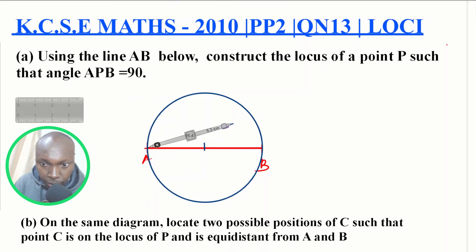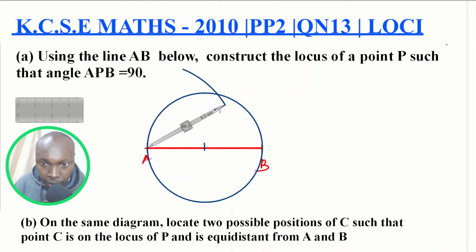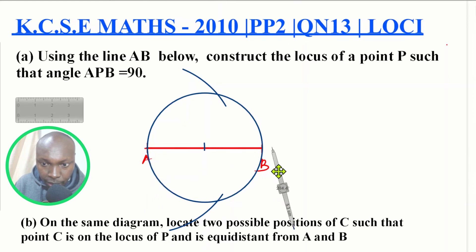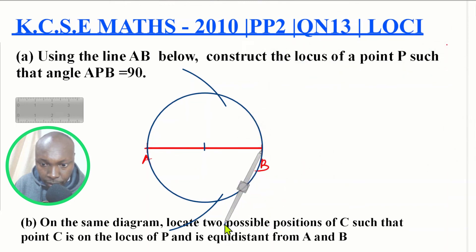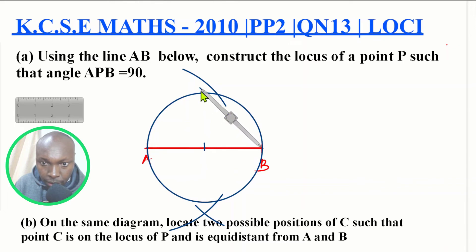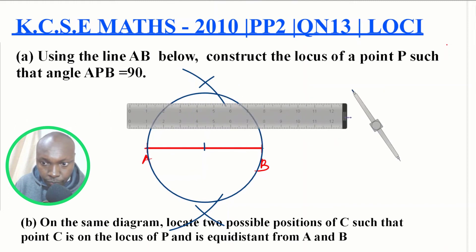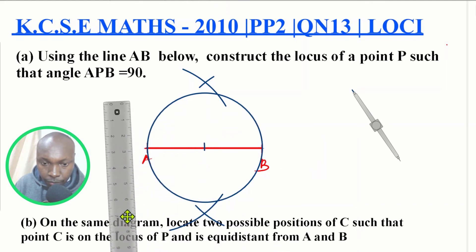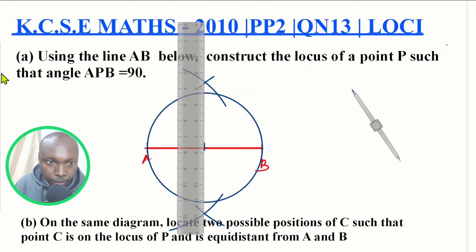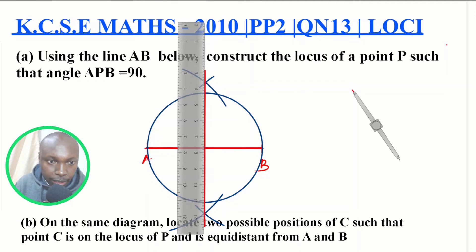To construct the perpendicular bisector, take your pair of compasses and open it to more than half of the line. From A, mark an arc on the top and another arc on the bottom. Without changing the radius, stand on B and cut those arcs. Then take a ruler and join the points of intersection of the two arcs. That line represents the locus of points equidistant from A and B.